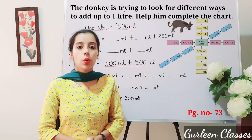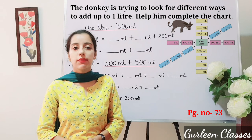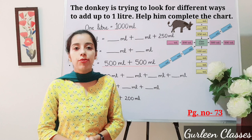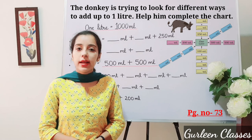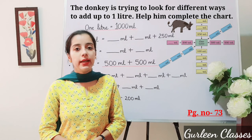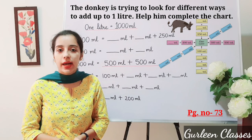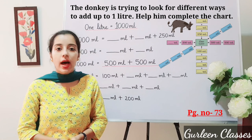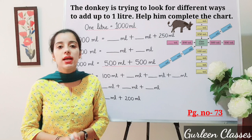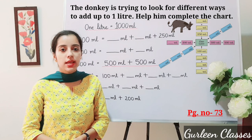Now let us do the question given in your Maths NCRT book, page number 73. The donkey is trying to find different ways to add up to one liter. Help him complete the chart. We know that one liter is equal to one thousand milliliter.